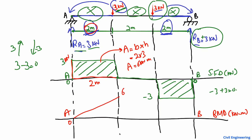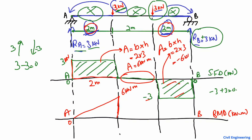Starting from 0 at support A, the bending moment rises to +6 kN·m at the first load point. In the middle zone the shear force is zero, so the bending moment remains constant at +6 kN·m. On the right side, the rectangle has a negative shear force of −3 kN over 2 m, giving −6 kN·m, so the diagram returns to 0 at support B.